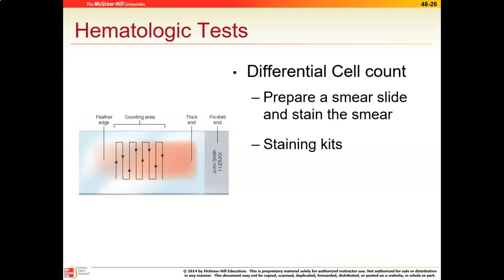To make the blood smear, we take a drop of blood and put it close to the frosted end of the slide. Then we take a second slide, draw back on that drop of blood, and push it forward. This gives us a thick end and a feathered end, and we count the red blood cells and white blood cells in the middle area. Getting the proper motion and the proper thick end and feathered end can be difficult, but it's really cool to see the red blood cells underneath the microscope.